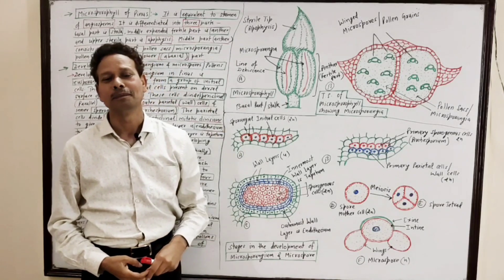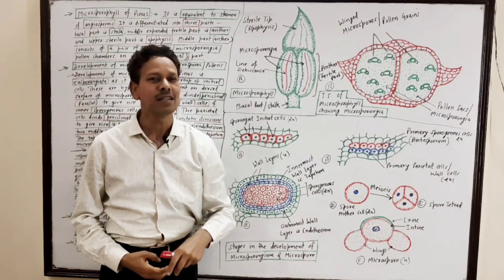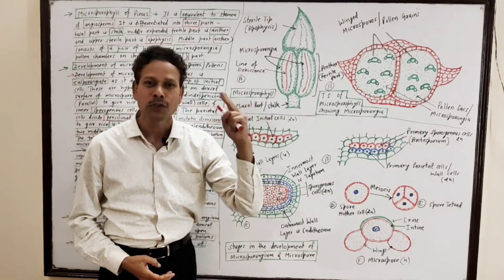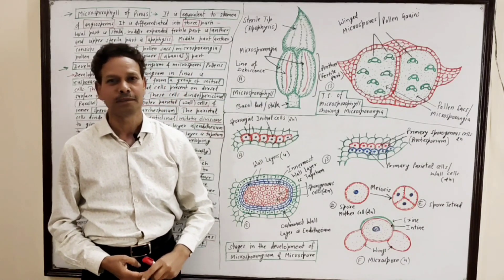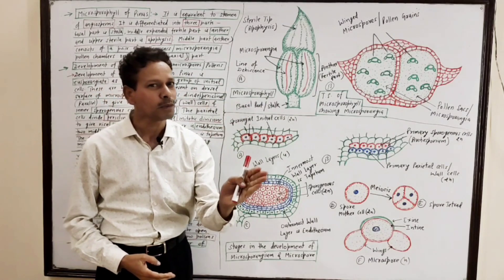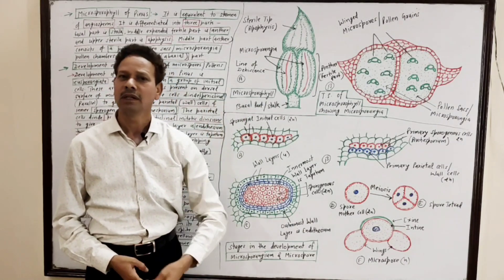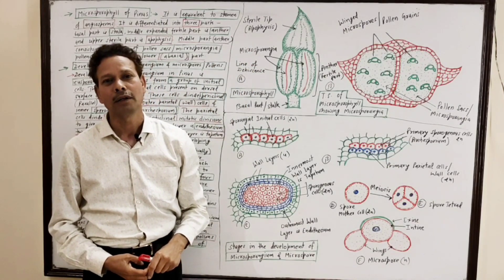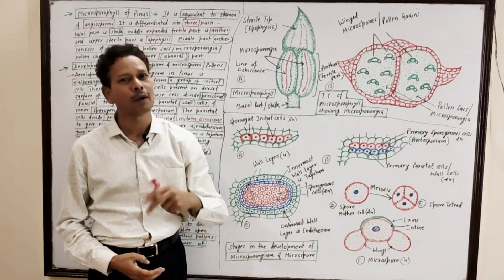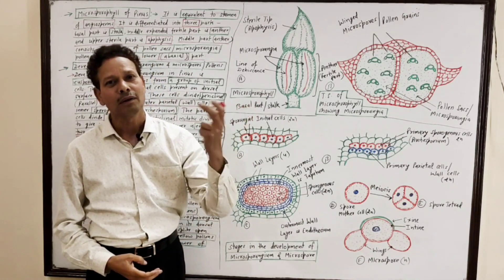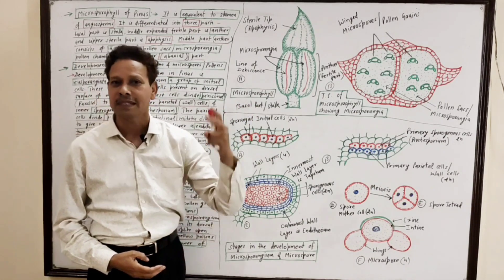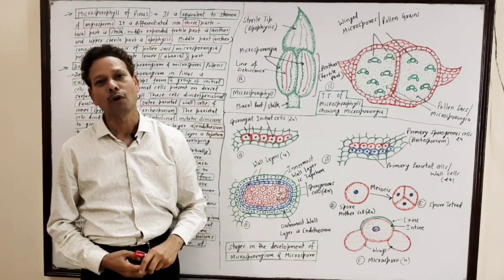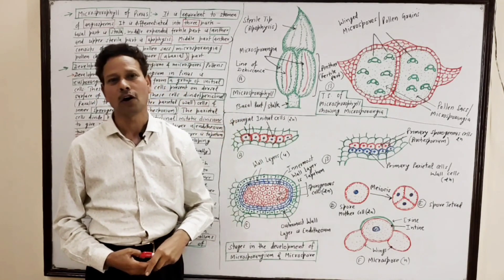Dear students, as we know, the Pinus tree is heterosporous, meaning the plant body produces two different types of spores: microspores and megaspores. The microspores develop on the male cone, while the megaspores develop on the female cone. The same plant body produces both types of cones — male cone and female cone.